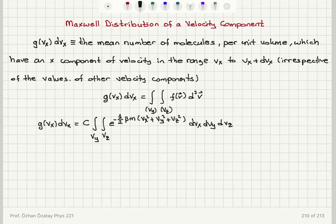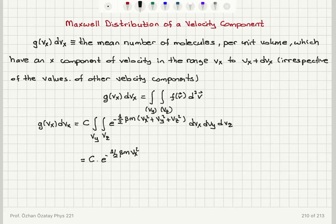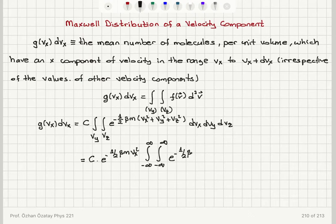Because I'm fixing vx to be in a range vx to vx plus dvx, the integration over dvx is not valid — vx is just a constant. So I take out C times e to the minus (1/2)βm·vx², and I am left with only the integral over vy and vz, which range from minus infinity to plus infinity, of e to the minus (1/2)βm(vy² + vz²) dvy dvz.